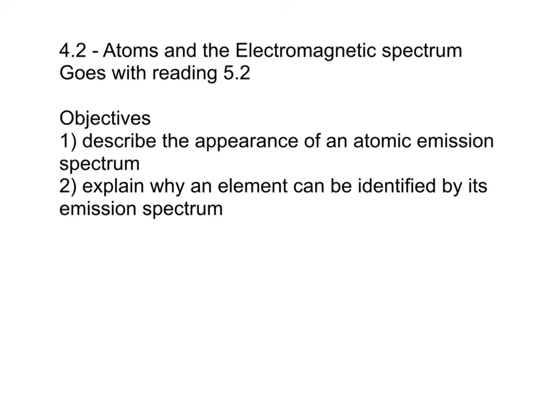The objectives for lesson 4.2 are, first of all, to describe the appearance of an atomic emission spectrum. And we're also going to look at something called an absorption spectrum, which isn't on the objective, but we are going to do it. And then secondly, to explain why and how an element can be identified by its emission or its absorption spectrum. So let's get to it.